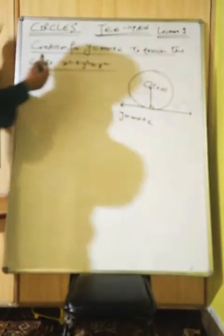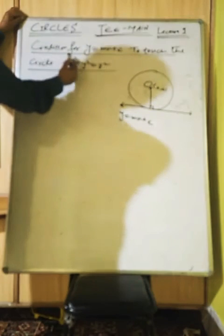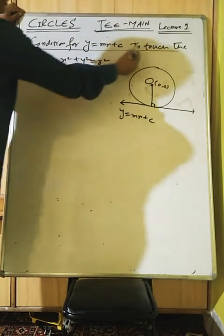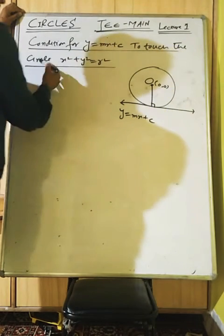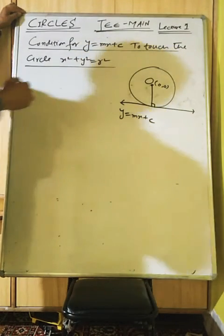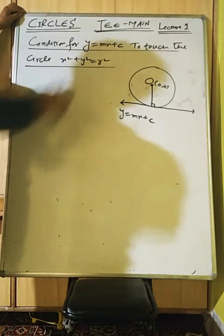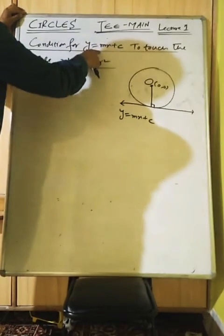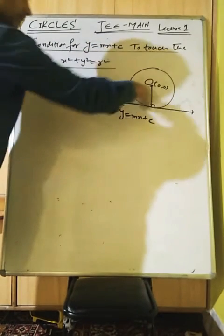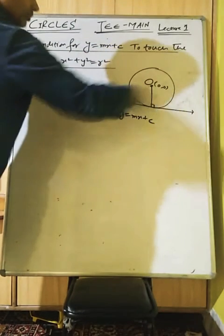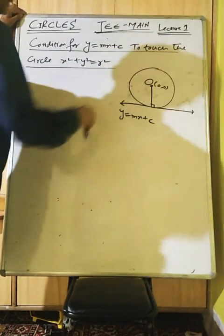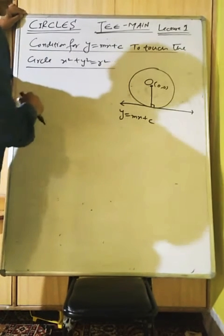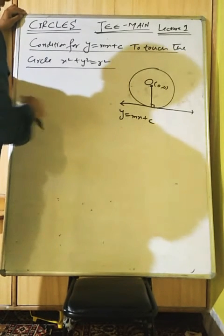Now the condition for y = mx + c to touch the circle x² + y² = r² — meaning this line is a tangent to the circle. This is called the slope form.